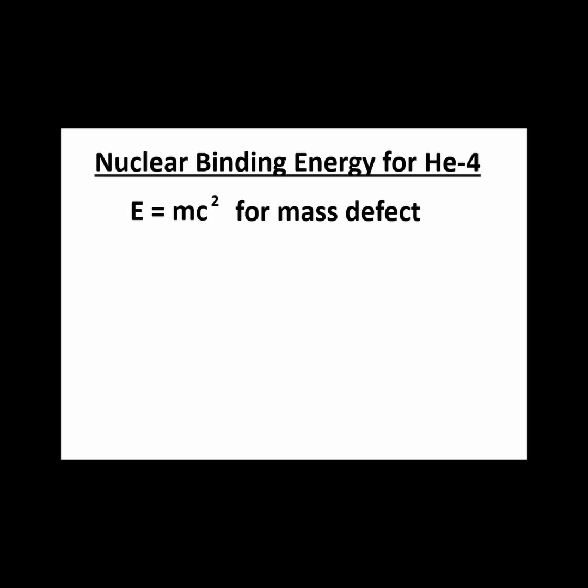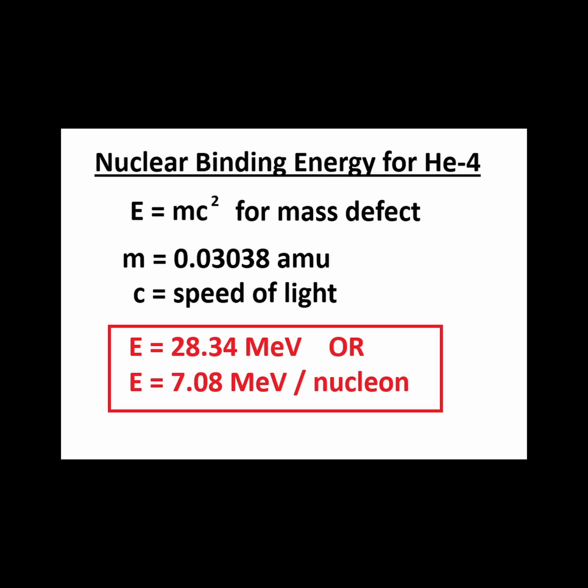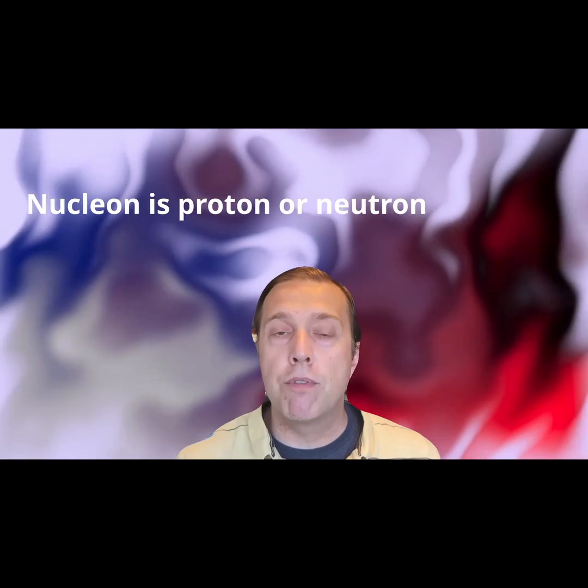We can calculate the nuclear binding energy for the helium-4 atom. This is done by converting the mass defect into its energy equivalent using E equals mc squared. If you plug in 0.03038 AMU for the mass in the equation and convert the units appropriately, we get the binding energy as E equals 28.34 mega electron volts, which is 7.08 mega electron volts per nucleon. A nucleon is another name for a proton or a neutron.